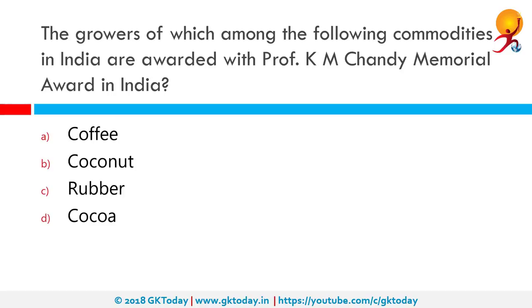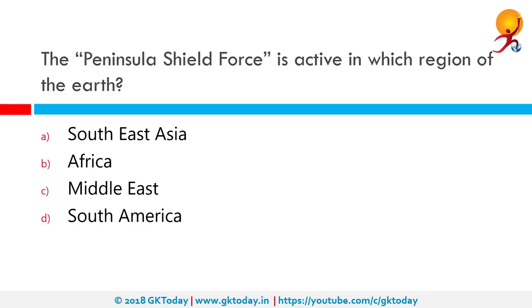The growers of which among the following commodities in India are awarded with the Professor K. M. Chandi Memorial Award? The correct answer is Rubber. The Rubber Board of India, established by the Rubber Act, has decided to honor the best rubber growers with the Professor K. M. Chandi Memorial Award.